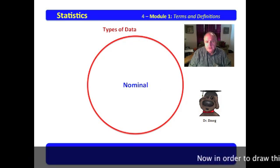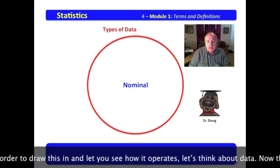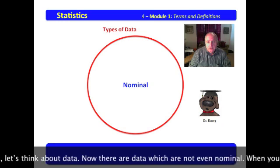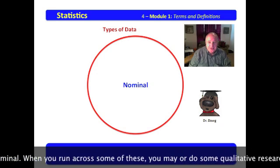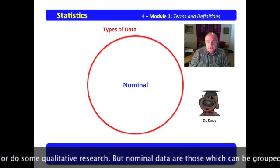Now, in order to draw this in and let you see how it operates, let's think about data. Now, there are data which are not even nominal. Now, when you run across some of these, you may want to do some qualitative research. But nominal data are those which can be grouped.